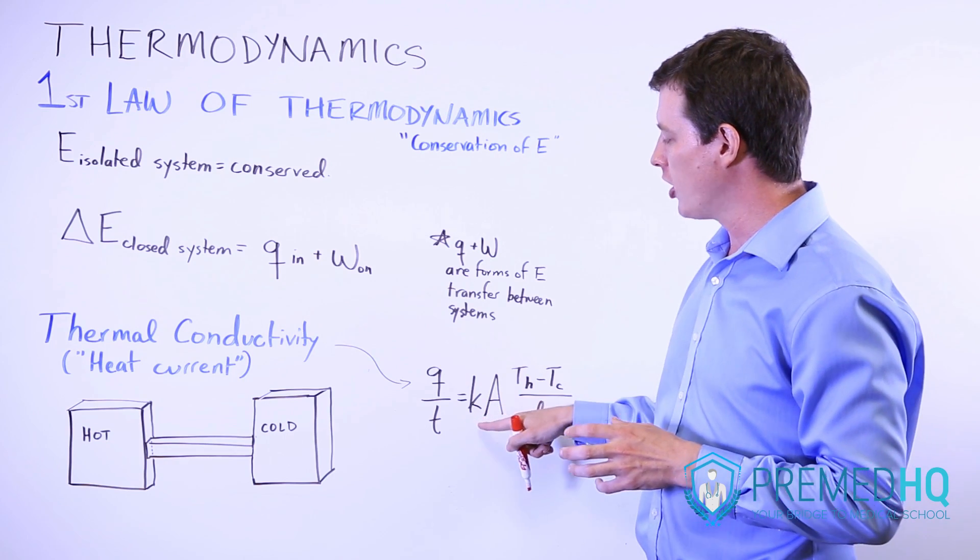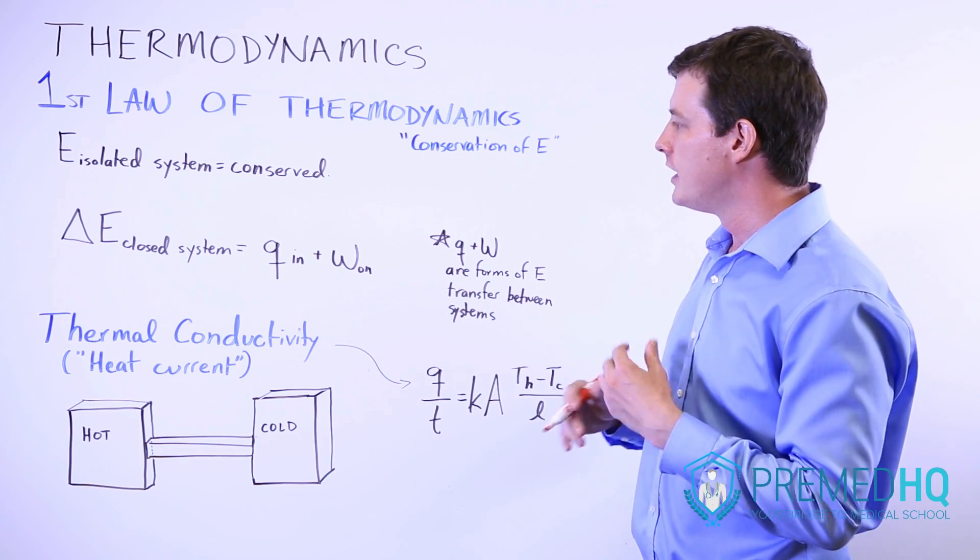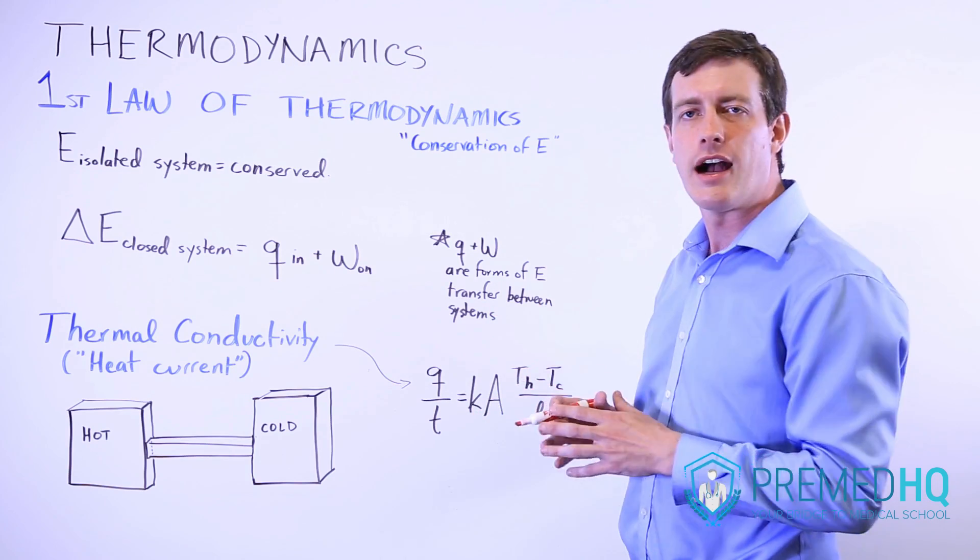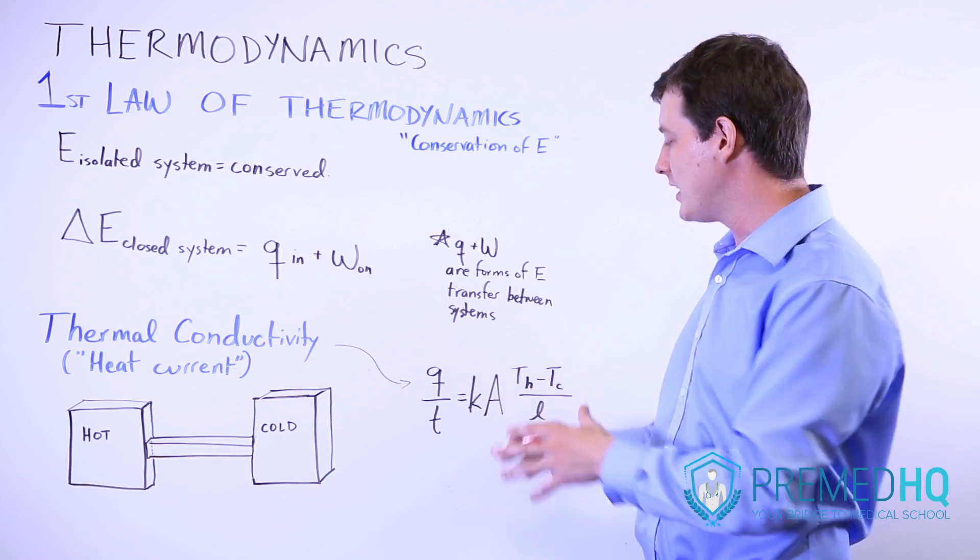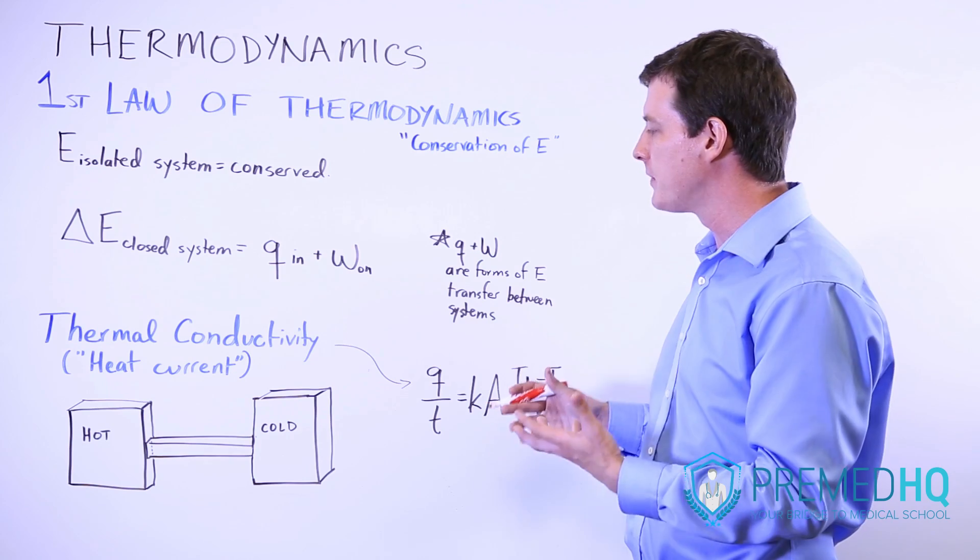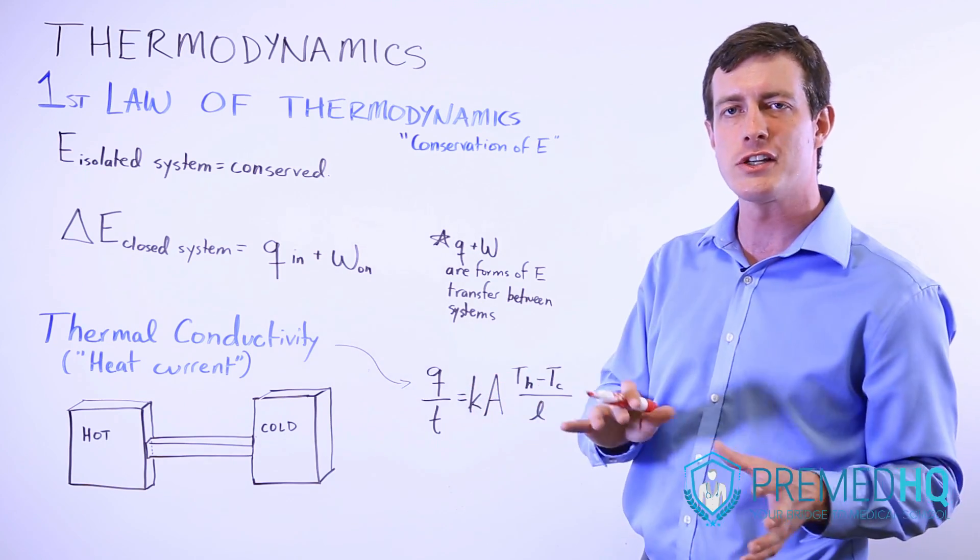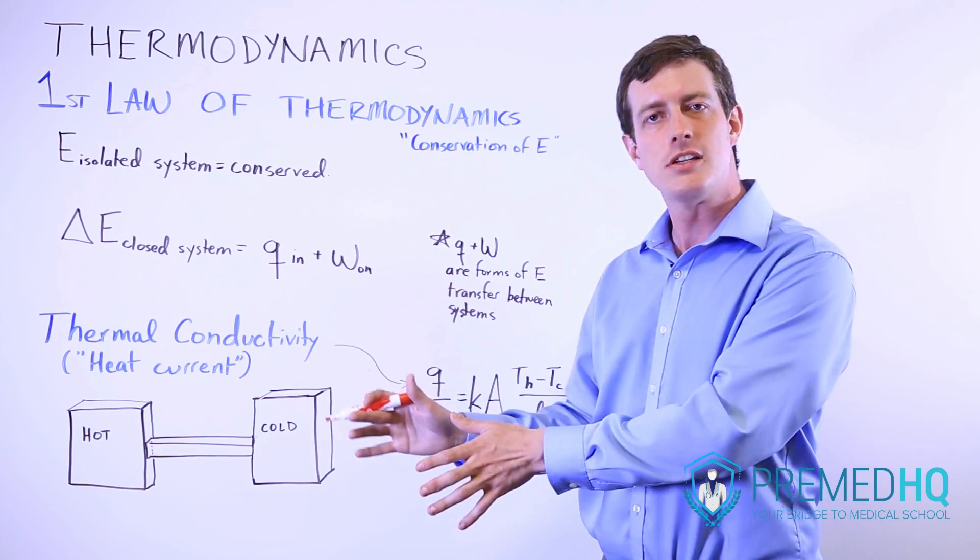The factors that influence this are K, which is some sort of thermal allowance constant that we have. And that will be provided to you. It could be an insulation constant or something that indicates the degree to which a material allows the transfer of heat from one side to the other.